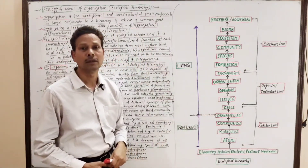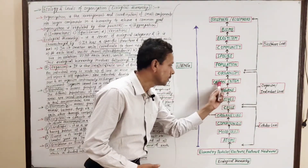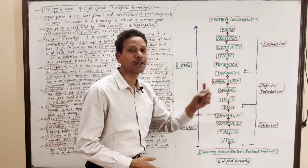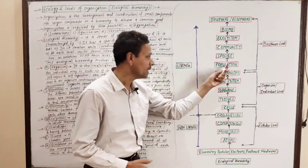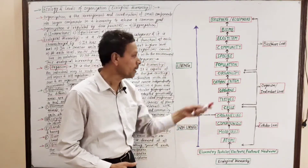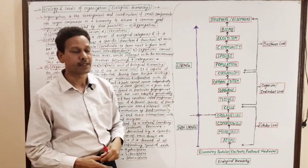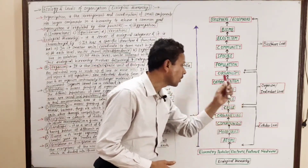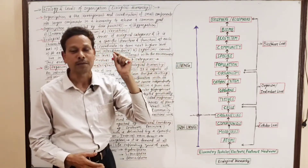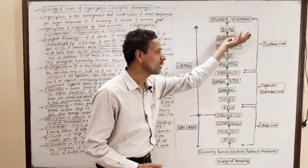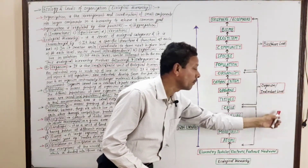Different cells collectively constitute tissues, and different tissues further group to form organs, then organ systems, and finally an organism — an individual — is formed. An organism may possess one cell or several cells, and may consist of tissues, organs, and organ systems. The organism is the smallest and basic unit of the ecological hierarchy — this is the individual level of organization.